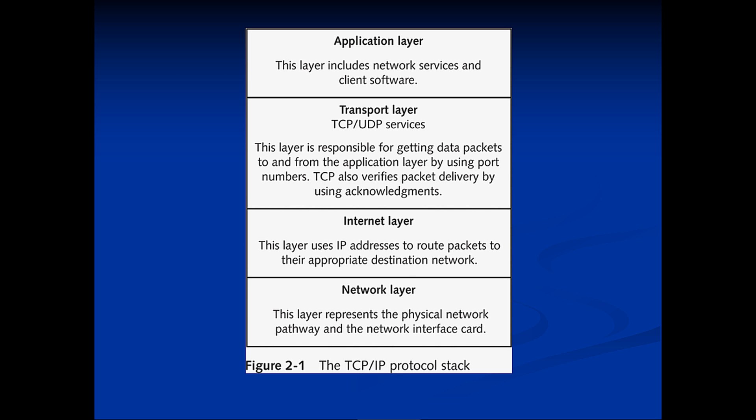What happens at each layer: The Application layer includes all the network services and client software — basically the application functionality. The Transport layer is responsible for getting data packaged to and from applications, and handles port numbers. The Internet layer uses IP addresses to route packets to and from their appropriate destination networks. The Network layer represents the physical network pathway and the network interface card.